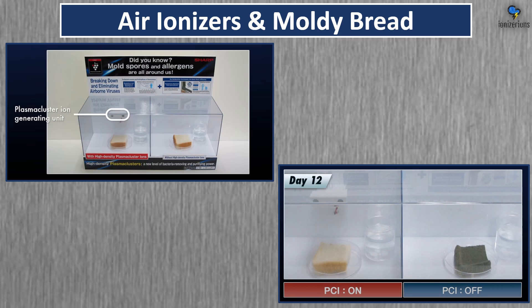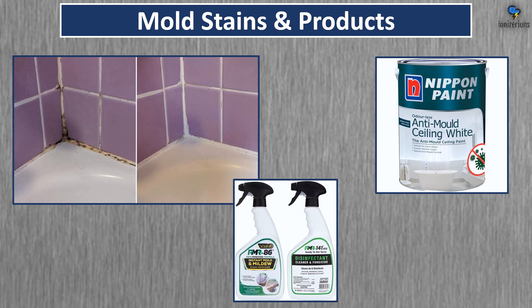An air ionizer was able to inhibit mold growth on bread after 12 days. Ionizers won't remove existing mold stains — you need heavy-duty chemicals for stains, which are different from disinfectant sprays. You can also shop for mold-proof goods like anti-mold paint, though the effectiveness of those products varies.